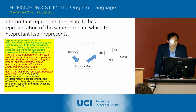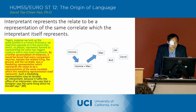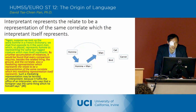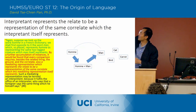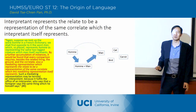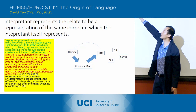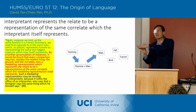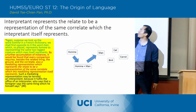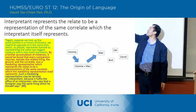And then he says, by further accumulation of instances it will be found that every comparison requires, besides the related thing, the ground and the correlate, also a mediating representation which represents the relate to be a representation of the same correlate which this mediating representation itself represents. Basically what he's saying is that this mediating representation — which is sort of the dictionary entry, homme equals man — is creating the relationship to man, and it's really the same relationship that homme has to man. So it's kind of both of them have to be pointing in that same way, but this is the one that creates the basis for that pointing.